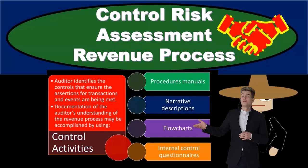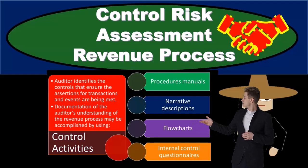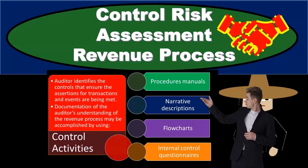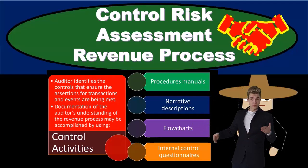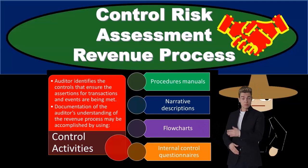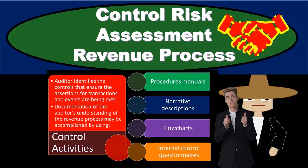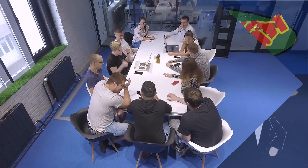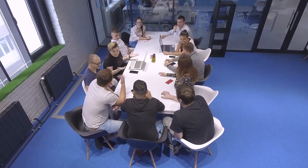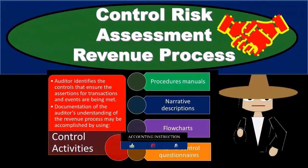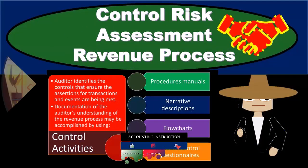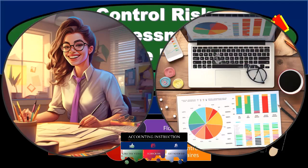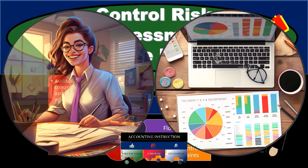Inherent risk refers to those risk factors within the revenue process that would exist if we did not have any controls — the inherent riskiness of the revenue process. Now we are considering control risks, which are the controls we put in place after considering the inherent risks. Control risks mitigate, to some degree, the inherent risks within the revenue process, depending on the type of organization or industry.